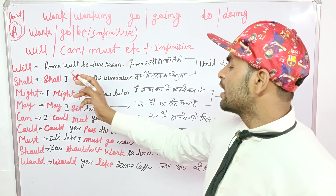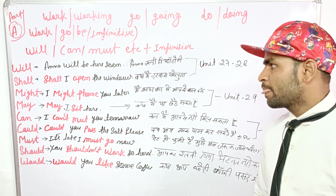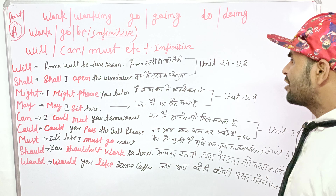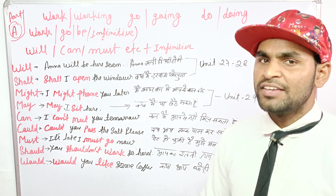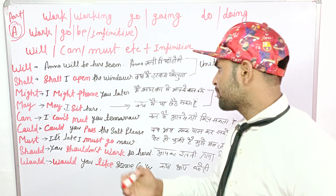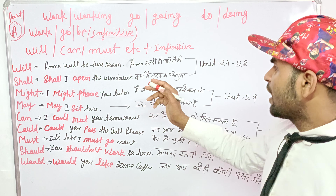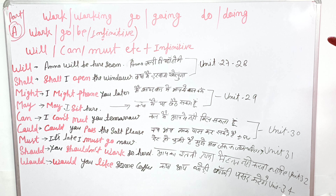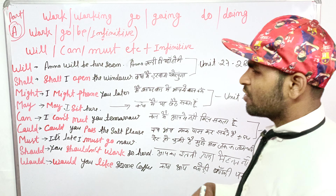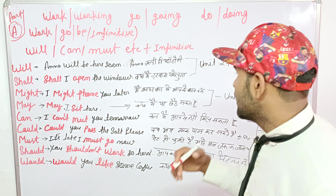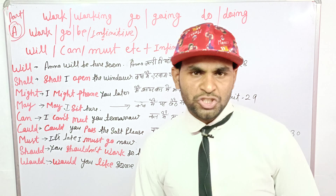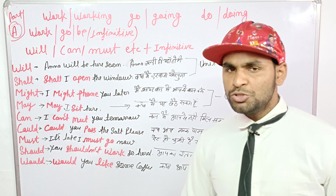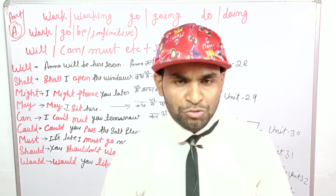Will and shall. Example: 'Anna will be here soon.' She's having a copy — shall I open the window? We use 'shall' with I and we. So: shall I open the window? She'll be here.